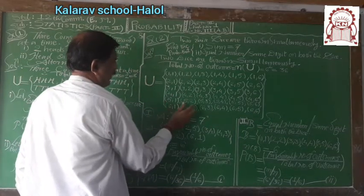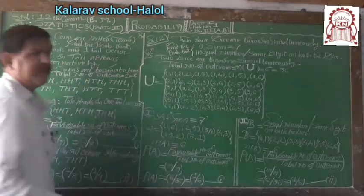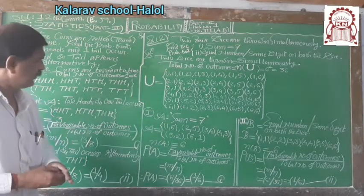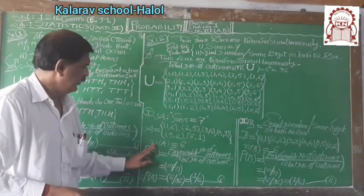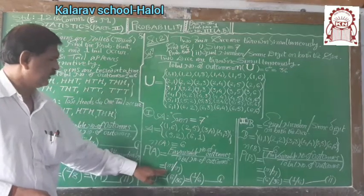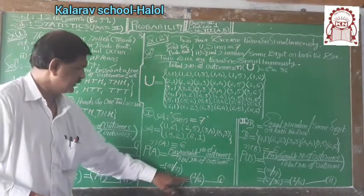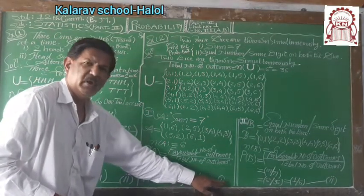In the next one (5,2). In the last one (6,1). Means favourable outcomes of A: 1, 2, 3, 4, 5, 6. n(A) equal to 6. Means favourable outcomes upon total outcomes, 6 upon 36, equal to 1 upon 6. This is result number 1.